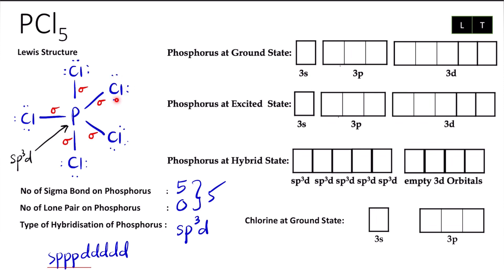For chlorine, the type of hybridization is sp3, but we don't need to show the full process because it is only a terminal atom — at least labeling alone is sufficient. Now we go for the phosphorus hybridization process.